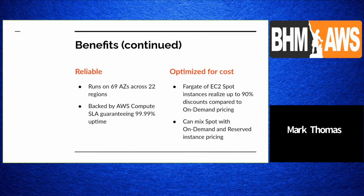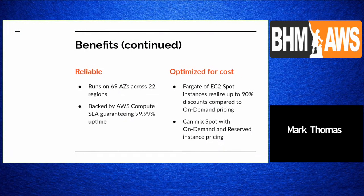ECS is optimized for cost: Fargate and EC2 spot instances can realize up to 90% discounts compared to on-demand pricing, and you can mix spot with on-demand and reserved. ECS itself is a free service — you only pay for the compute resources you use, with no additional cost.